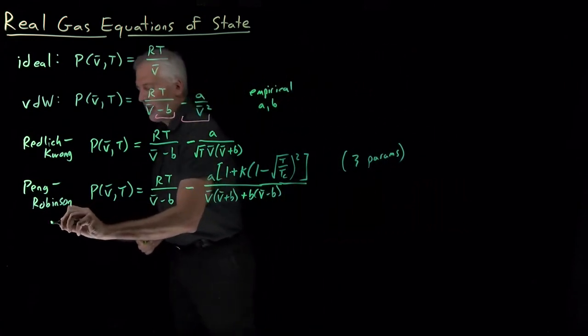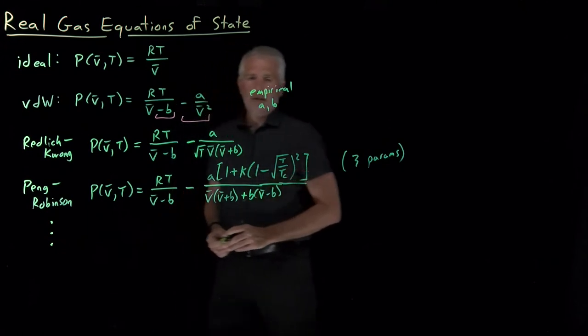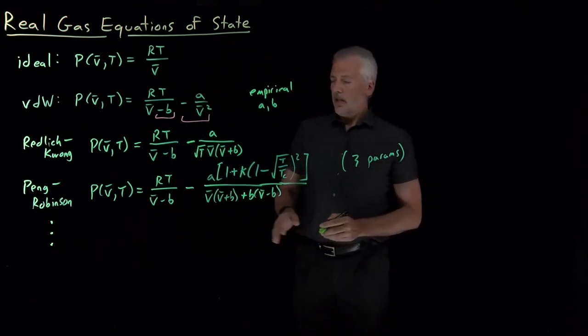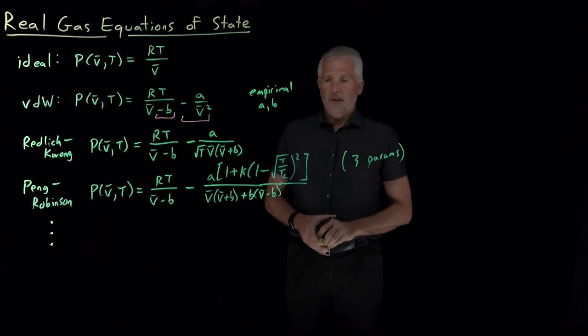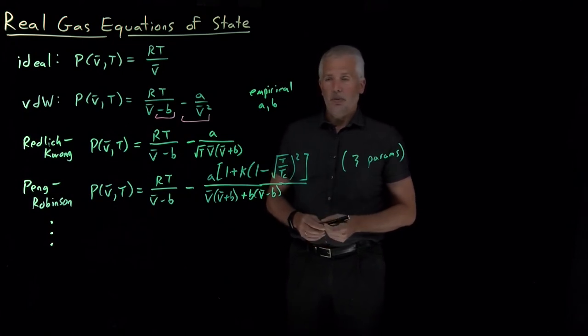There is, in fact, a whole long list of these equations of state that we could use. There's not just three parameters, there's five parameter and 12 parameter, much more complicated equations of state, depending on how accurate you want to get.